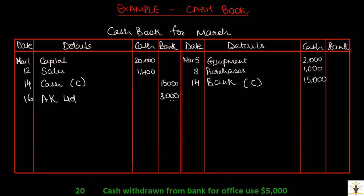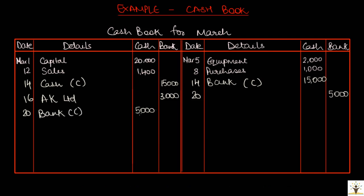On March 20, cash was withdrawn from bank for office use. Again, this is a contra-entry. Cash is being withdrawn from bank, so bank balance is reducing, and cash is increasing. Entry will be recorded on the debit side in the cash column — record the amount first. And it is a payment for the bank column, so go to the credit side and record the amount in the bank column. Then record the details column.